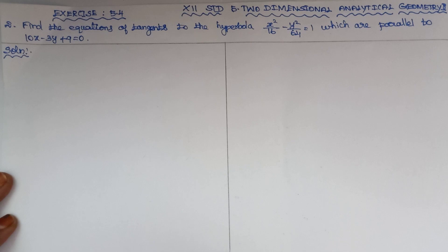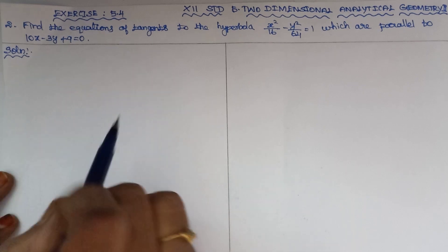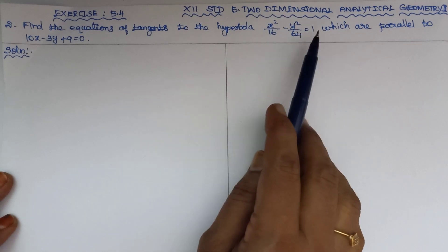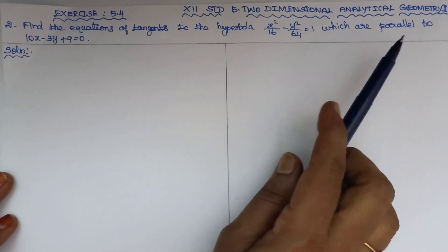Good morning to everyone. 12th standard, 5th chapter, two dimensional analytical geometry, exercise 5.4, second problem. Find the equations of tangents to the hyperbola x square by 16 minus y square by 64 equal to 1 which are parallel